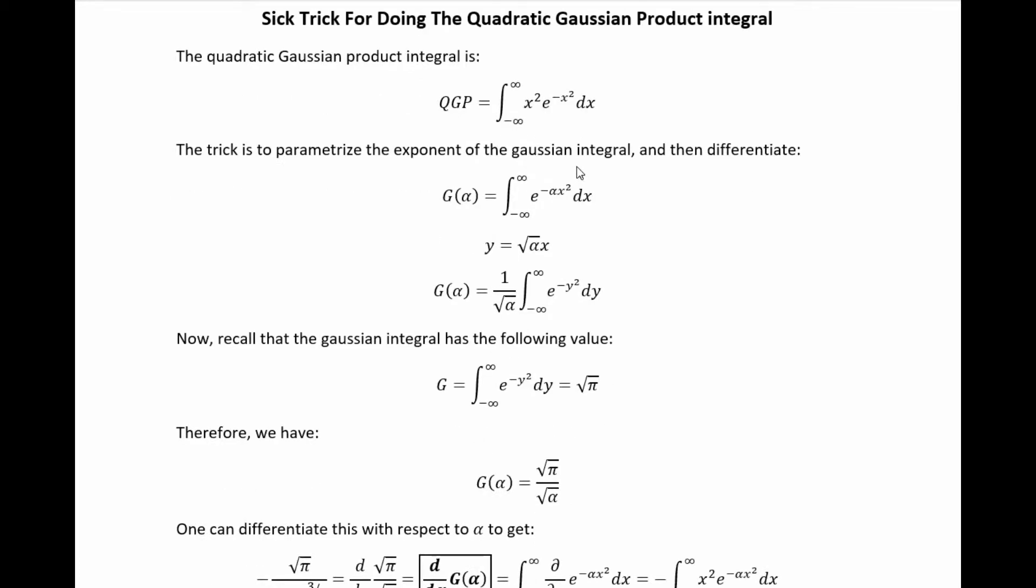The trick to doing this integral relies on a clever parameterization and the known result for the straight-up Gaussian integral that I derived in my last video via another trick with coordinate transformations in that case. So if we take the Gaussian integral and we parameterize it with alpha,